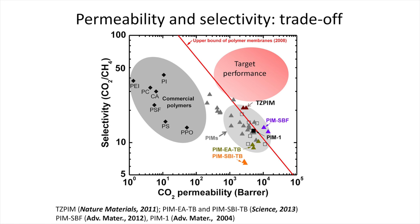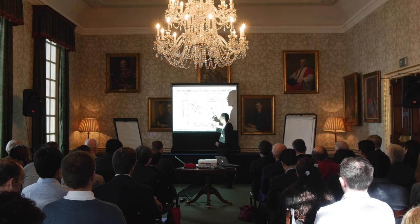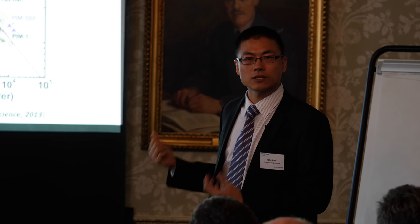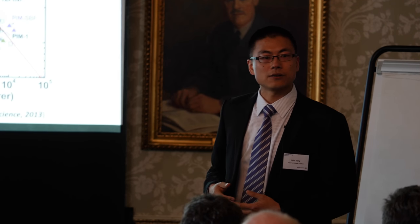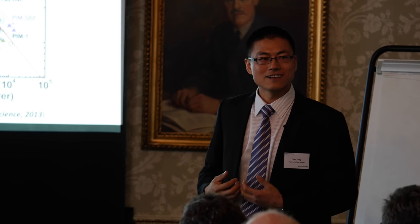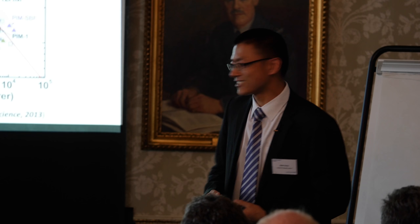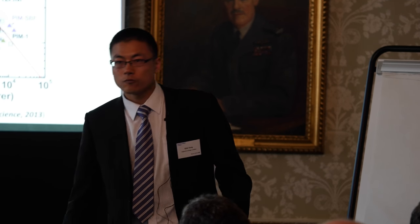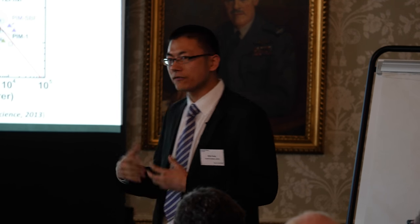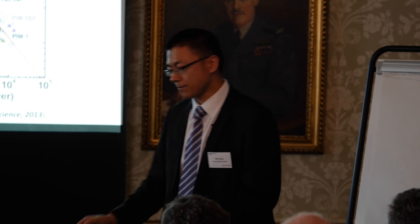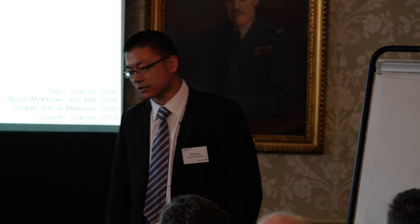For example, in the carbon capture process being developed by MTR, gas permeance needs to be pushed to the next level. Commercial polymers have relatively low permeability measured in Barrers — the Barrer being the unit of gas permeability. For our target performance in gas separation membranes, we want to push permeability two or three orders of magnitude higher, so we can scale up the membrane separation process. To do this, we're looking at a new generation of porous materials.